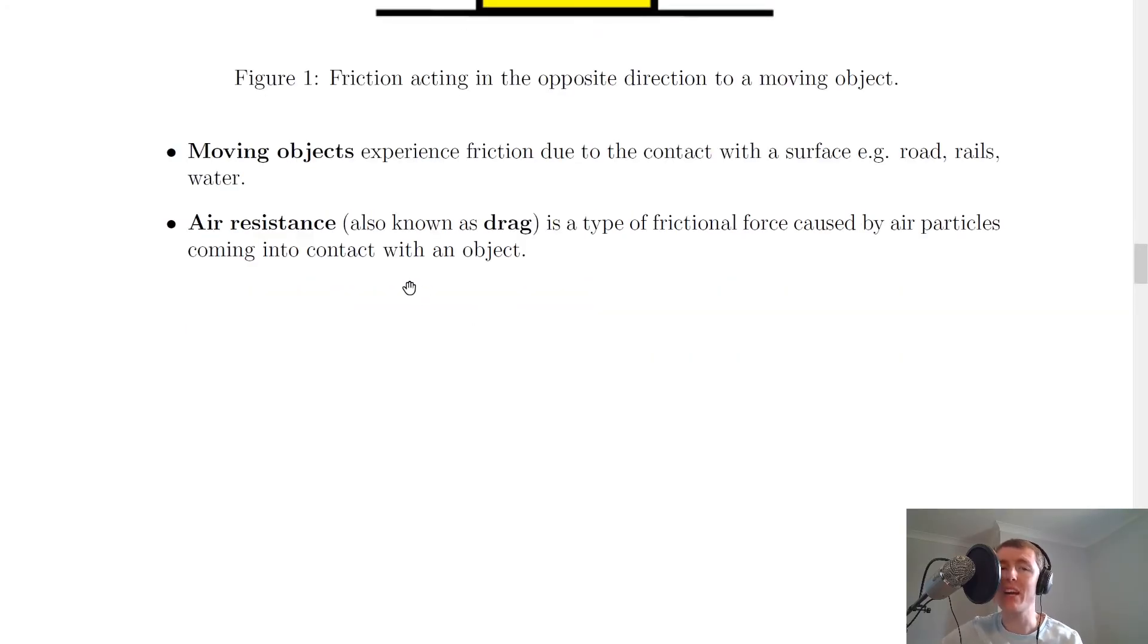Lastly, you should remember that air resistance, which is also called drag, is a type of frictional force caused by air particles coming into contact with an object. So an easy example to think about for that is a skydiver opening a parachute, and the air particles are going to come into contact with the inside of the parachute. And that's going to cause an air resistance or a drag force upwards on the skydiver.